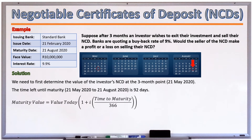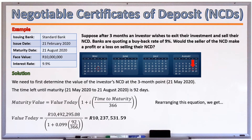We use the formula: maturity value = value today × (1 + i × time to maturity/366). Rearranging, value today = maturity value / (1 + i × time to maturity/366). The maturity value has not changed — the NCD will still pay 10,492,295.08 rand. Valuing it at the original yield of 9.9% over the remaining 92 days, the value today is 10,237,531.59 rand, which simply reflects the time value of money.